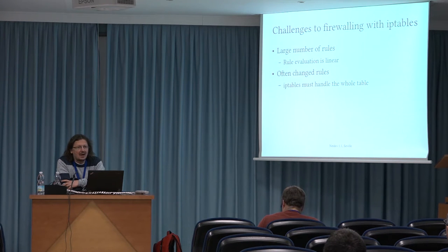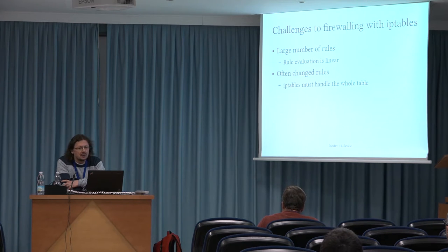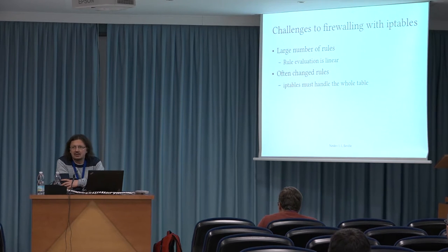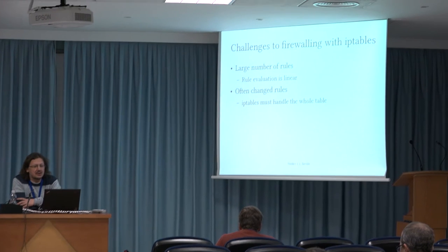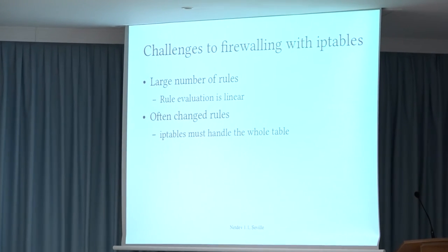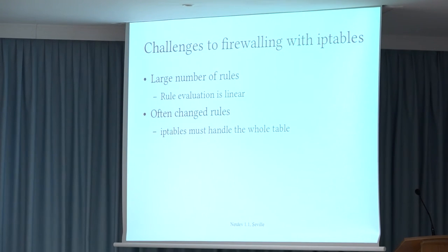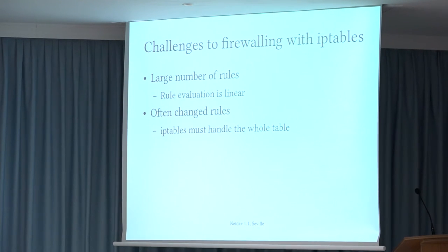The main challenges are the large number of rules or often-changing rules. iptables evaluates the rules linearly, so thousands of rules in the same chain means slower processing for any rule after that chain. Also, iptables cannot add, delete or replace a single rule — the whole table must be reconstructed and replaced with the old one, which requires much more resources.